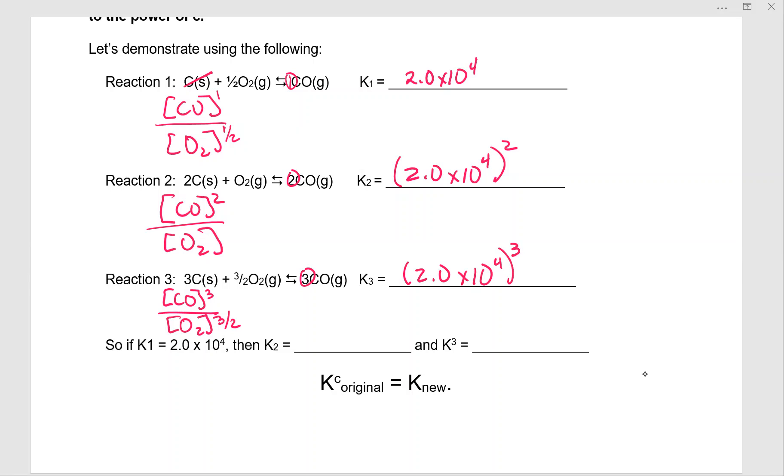Now they love to put these questions on the multiple choice section. So you should be able to handle this type of math. So K2 is going to be equal to 2 squared, which is 4 times 10 to the eighth. So 4.0 times 10 to the eighth. 2 cubed is 8 times 10 to the 12th. So 8.0 times 10 to the 12th. So you take your original, you raise it to the power of the coefficient, and that is your new K.